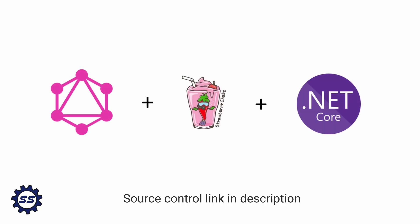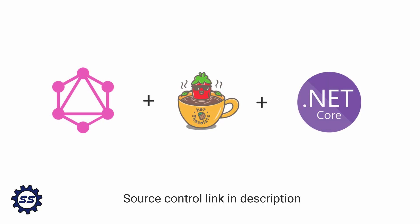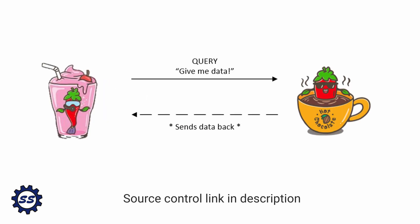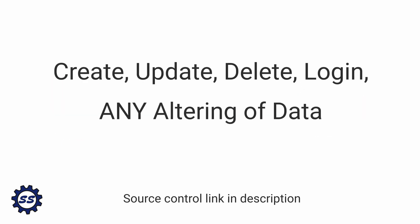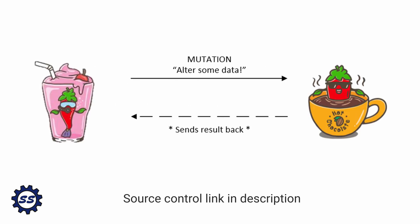Last time we made GraphQL queries using Strawberry Shake in our client application against our GraphQL server, which uses Hot Chocolate, so that we could get data from the server. But that was just for getting data. What about creating data, updating data, or deleting data? Now our GraphQL API supports GraphQL mutations, and mutations are used for just that — creating, updating, and deleting.